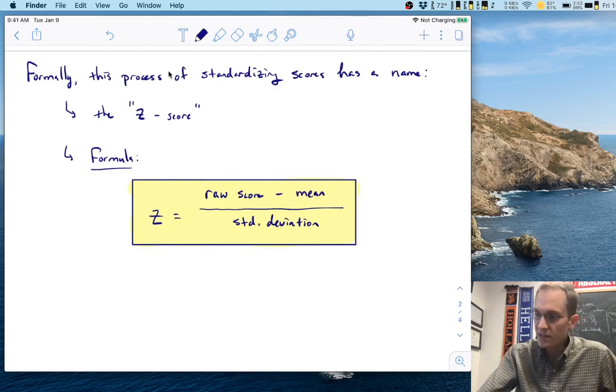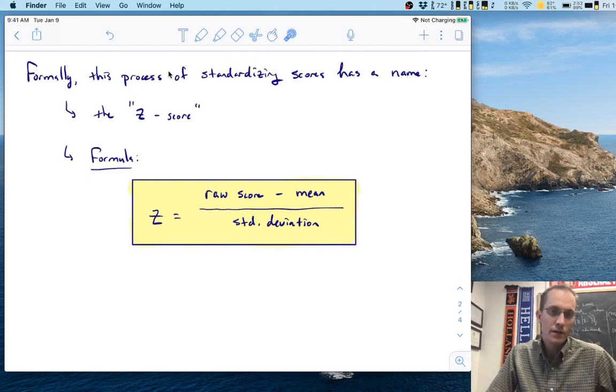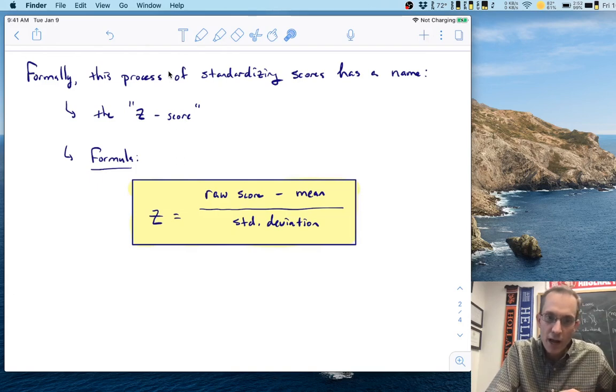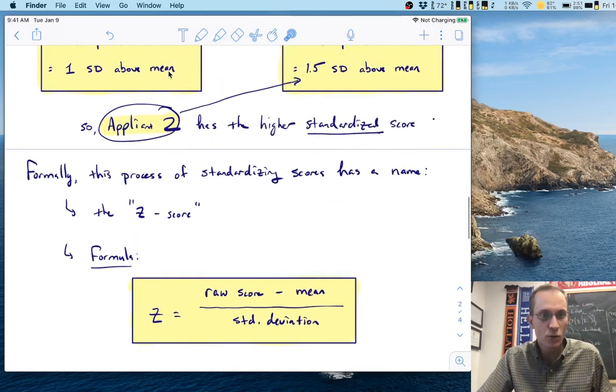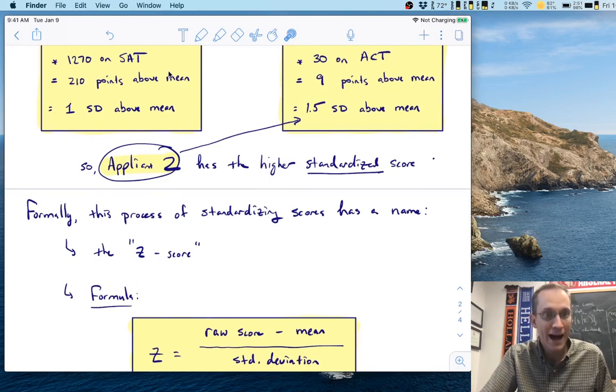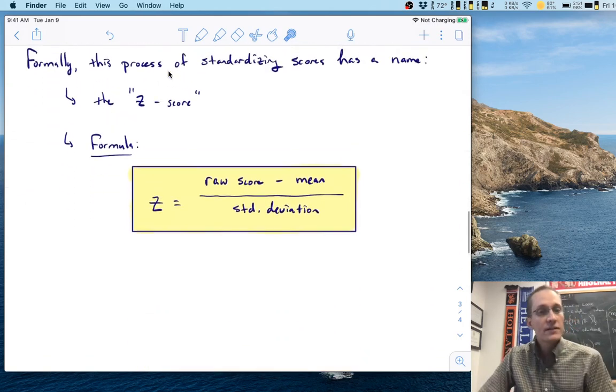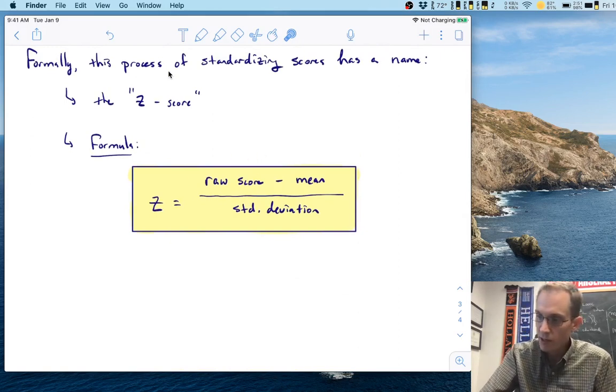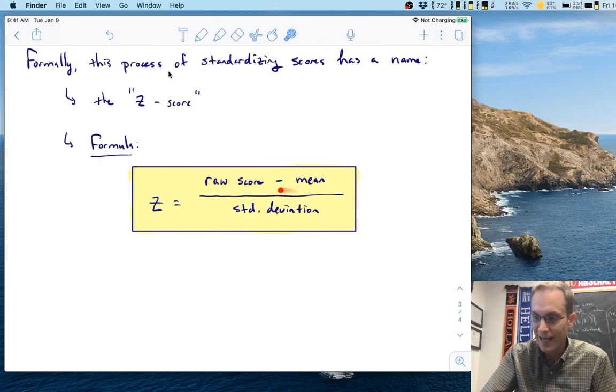Essentially, you take the difference, you take the difference in the raw score and the mean, and you divide it by the standard deviation. Now, if you want to see where that comes from, just go back a couple of minutes in the video and look at how we figured out the Z scores up here, we figured out what the difference was. That's what the 210 and the nine are. And then we divided that difference by the standard deviation. And that's how we got one standard deviation above the mean and 1.5 up here. So computing a Z score amounts to taking the raw score, subtracting the mean, and then dividing by standard deviation.